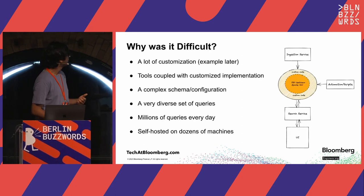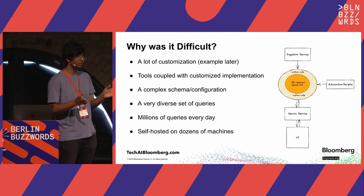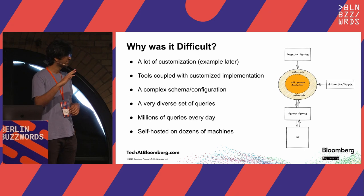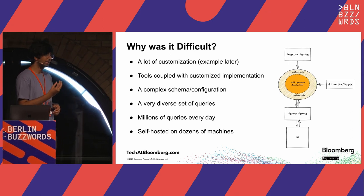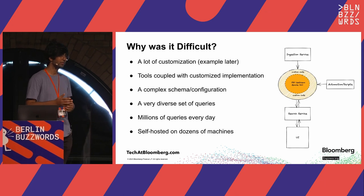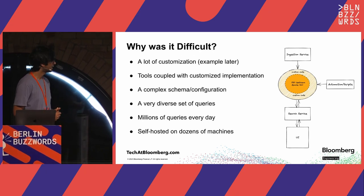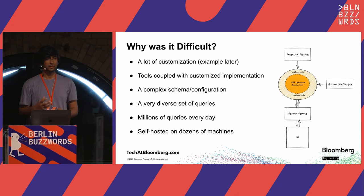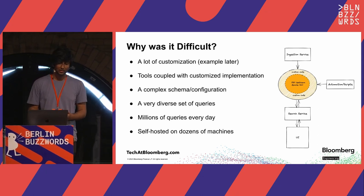Why was it difficult for us specifically? On the right-hand side there's a high-level overview of our search system. We had the old Apache Solr with some custom code, and then we had our ingestion and search services as well as some scripts, all of which were quite tightly coupled with these customizations. In order to change the heart of the system, you had to make sure nothing breaks, because you have to deliver this change transparently to all of the users — no users should be affected. Also, because we serve a lot of news on a very large scale with a diverse schema and diverse queries, the sheer scale makes moving to a newer version quite a difficult task.